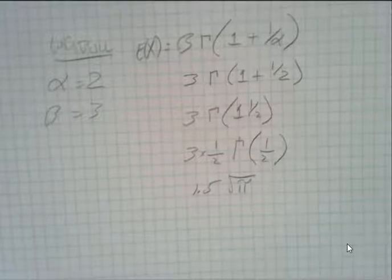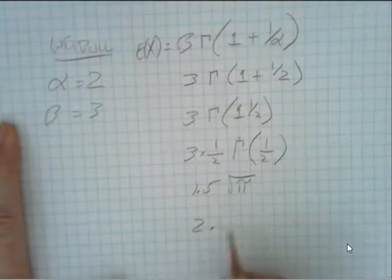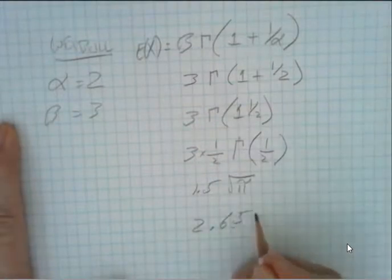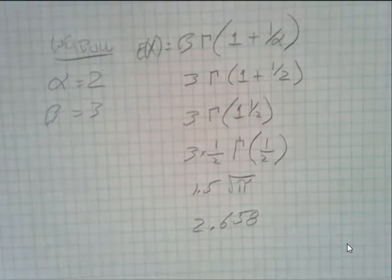And then if you simply do the math, you'll find that 2.658, if I've done my math correct to some number of decimal places, is the expected value of the function.